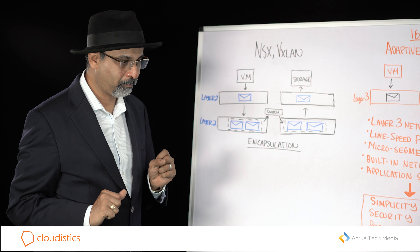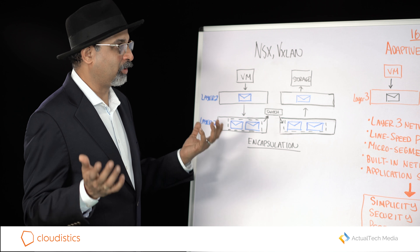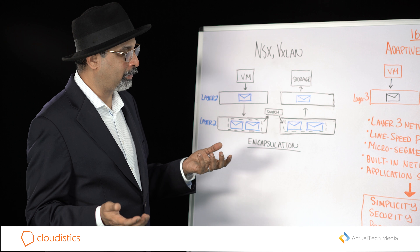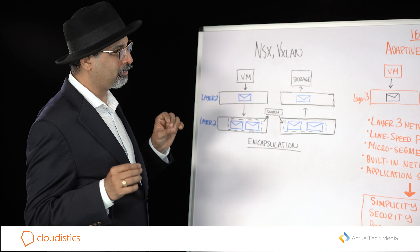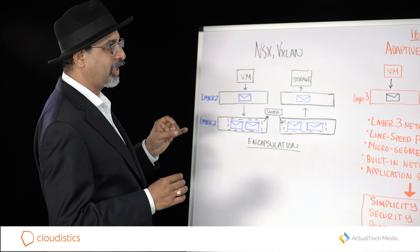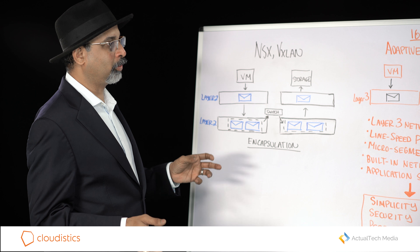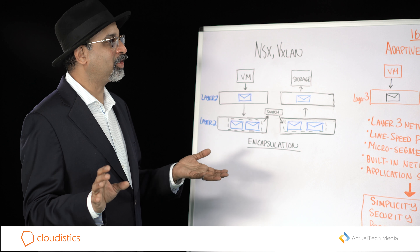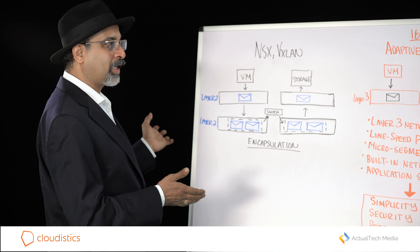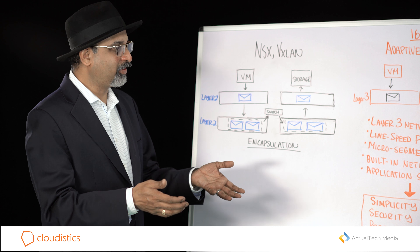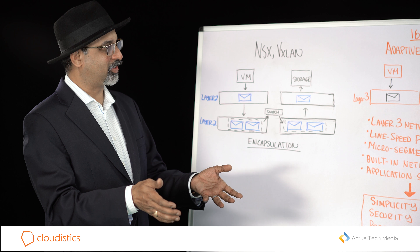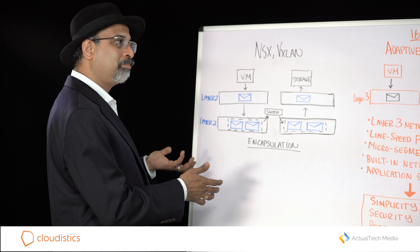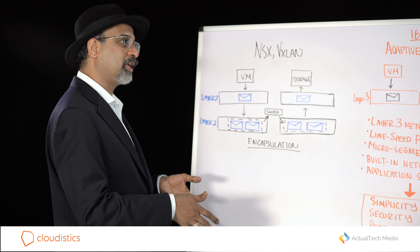We buy the simplicity argument — it's actually a great argument and it works very well. The problem with network virtualization has been, to this day, performance. You lose a lot of performance. In the traditional virtualization world, this is like going back to the 90s: if you wanted simplicity, you went with virtualization, but if you wanted performance, you went physical. And that's the same problem that seems to plague network virtualization today.